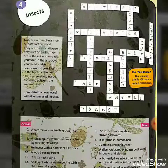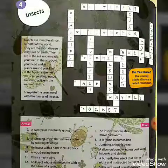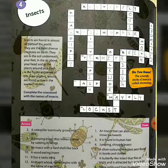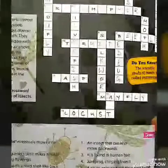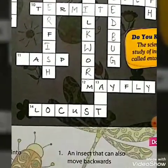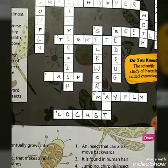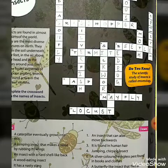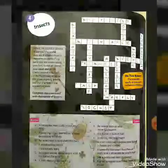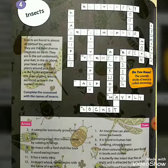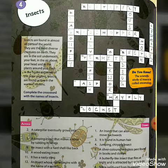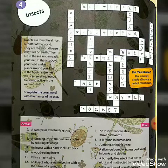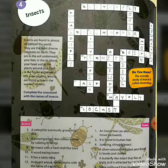Now, down side, question 13: a tiny insect that lives underground. Your answer is ant — A-N-T. You can write your own. Now fourteenth one: a crop-destroying insect that destroys crops such as rabi or kharif crops. Your answer is locust.